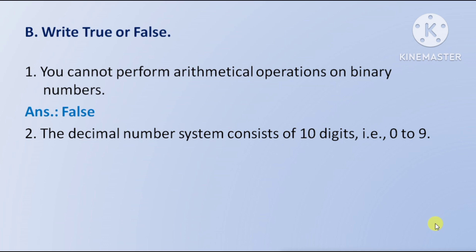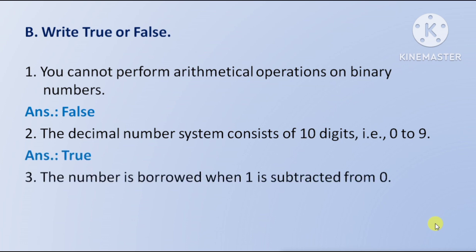Next question: the decimal number system consists of 10 digits, 0 to 9. This is true. Next question: a number is borrowed when one is subtracted from zero. This is true.